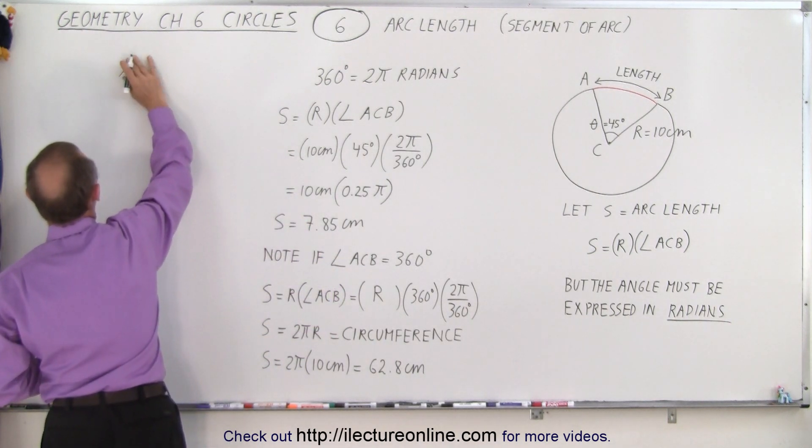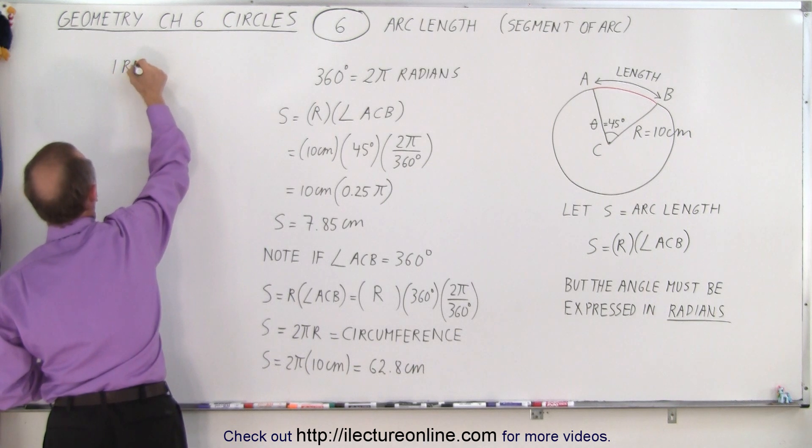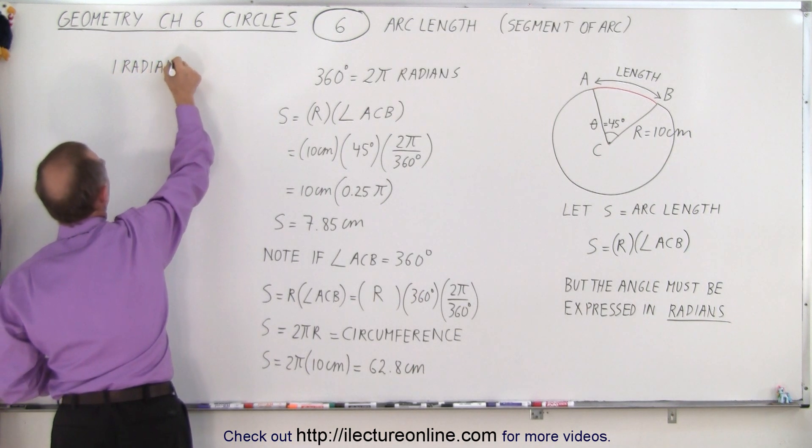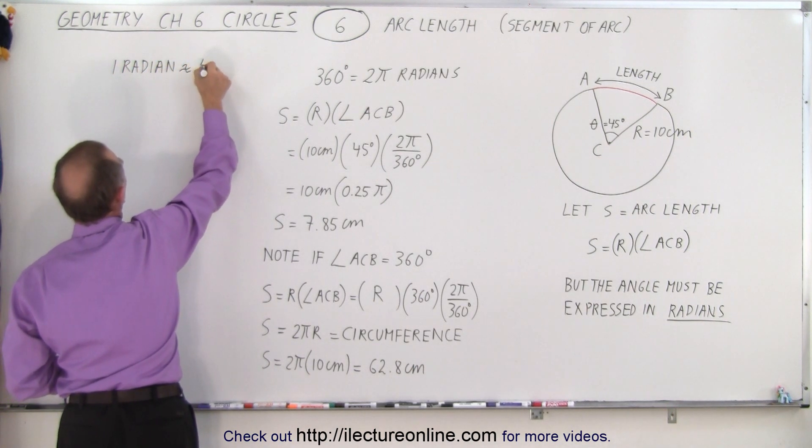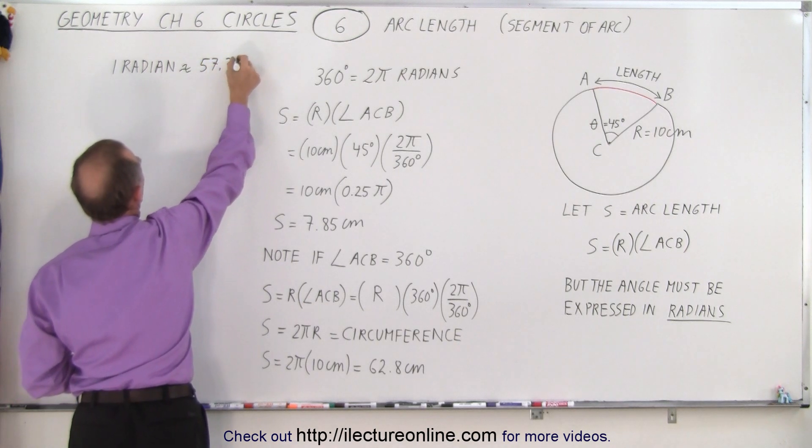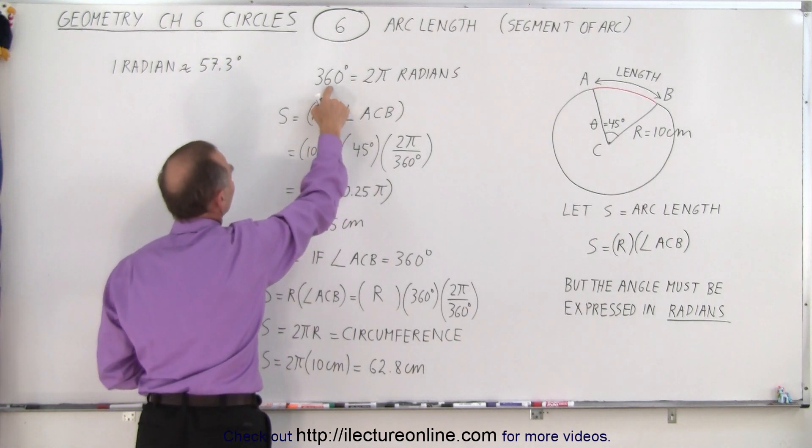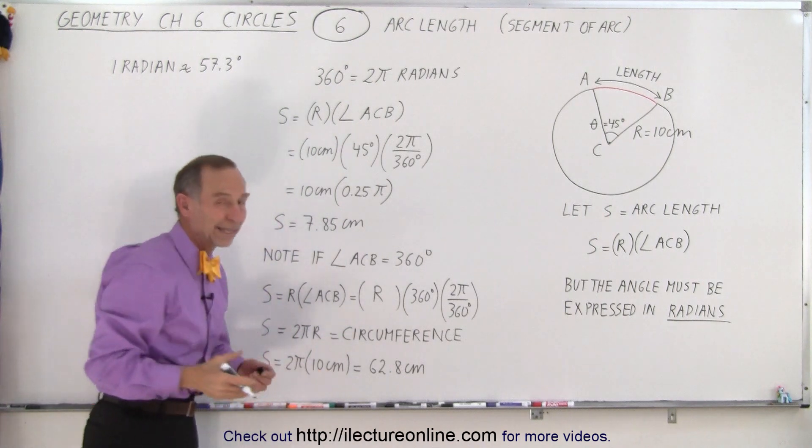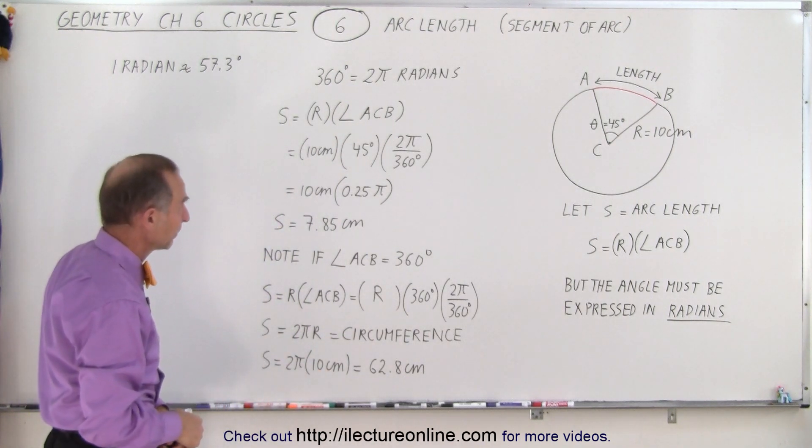So one radian is approximately equal to 57.3 degrees. Essentially, if we take 360 degrees divided by 2 pi, we get the exact value of the radian in degrees.